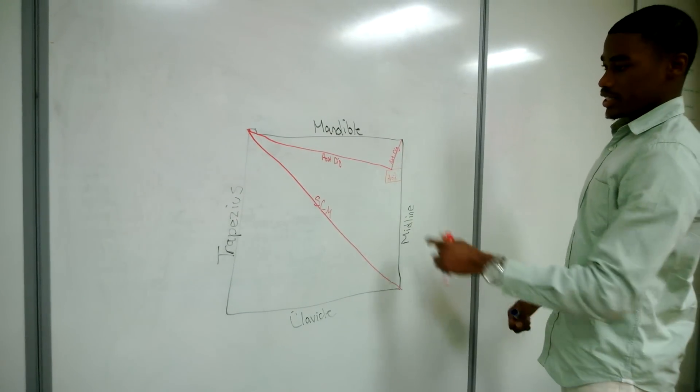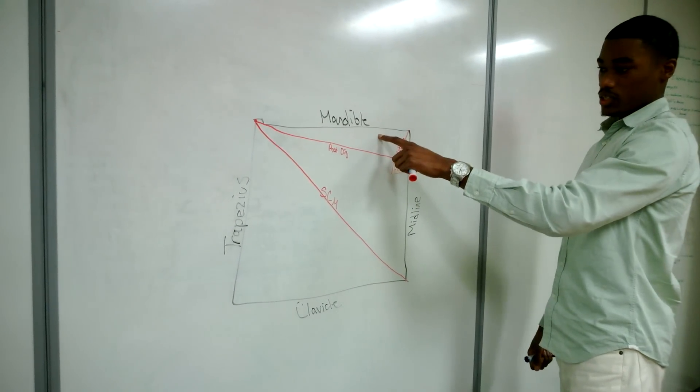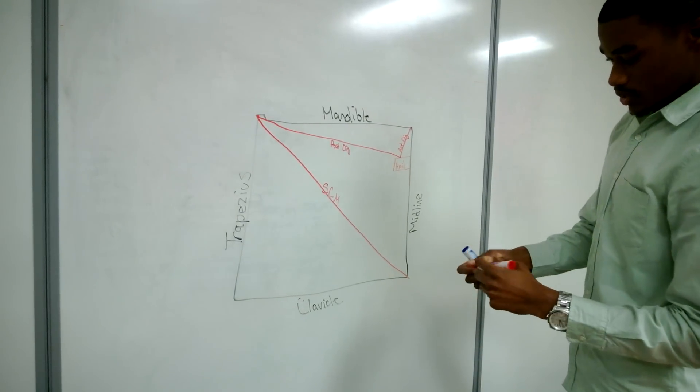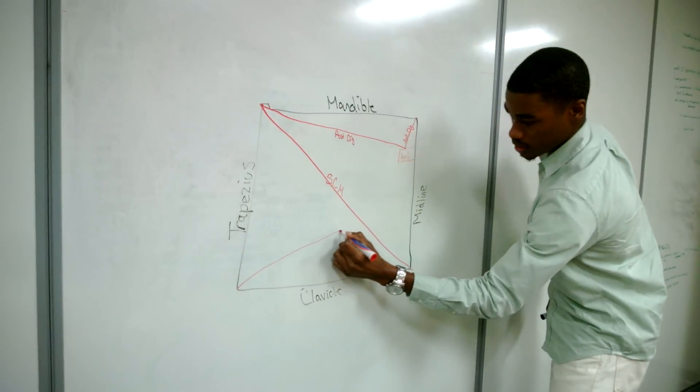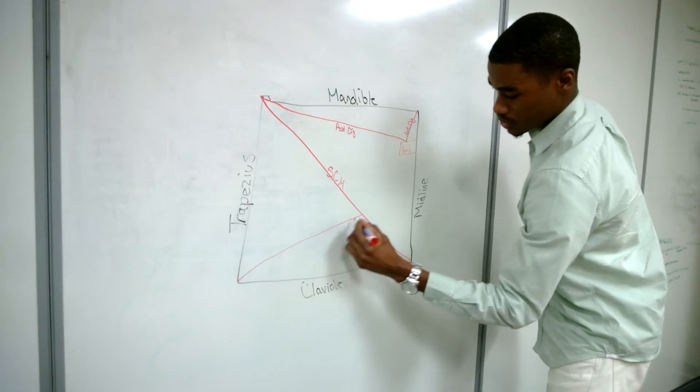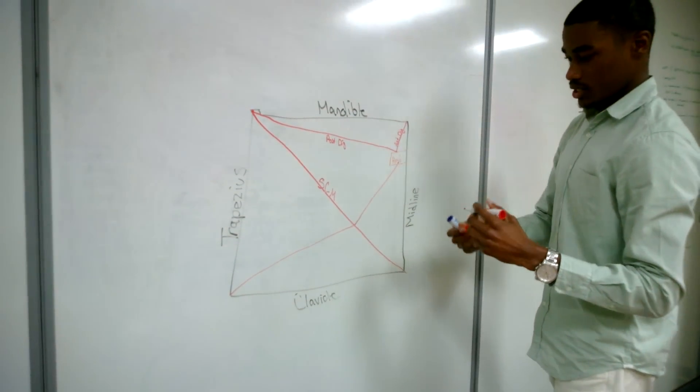So as you see already, we have our submental triangle. We also have our submandibular triangle. Next, we're going to draw one more muscle. This is going to be the omohyoid. Omohyoid comes from your shoulder to your hyoid. You have the superior and inferior portion of it.